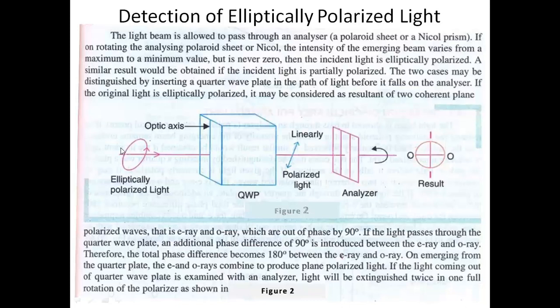To distinguish them, we first pass the elliptically polarized light through a quarter wave plate before the analyzer. Elliptically polarized light consists of two components — E-ray and O-ray — that are out of phase by 90 degrees. When it passes through the quarter wave plate, an additional phase difference of 90 degrees is introduced, making the total phase difference 180 degrees. As a result, the E-ray and O-ray combine on emerging from the quarter wave plate to produce plane polarized light.